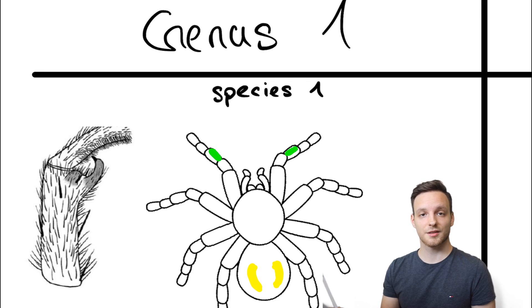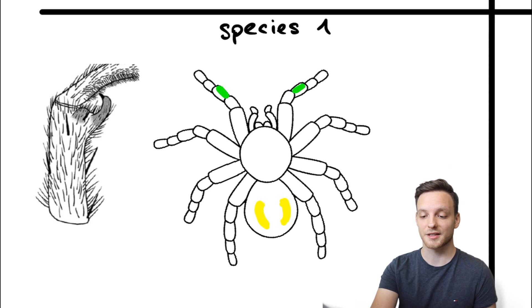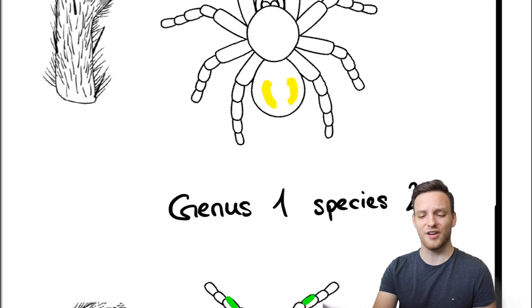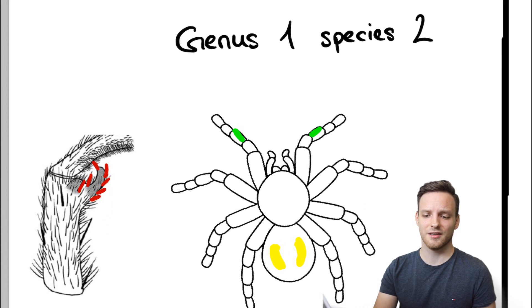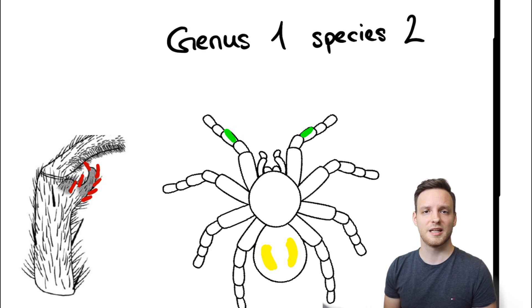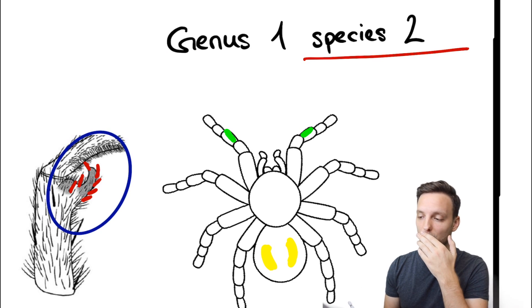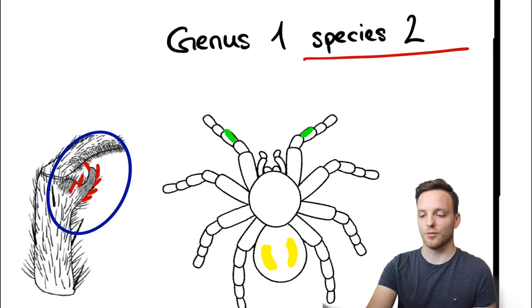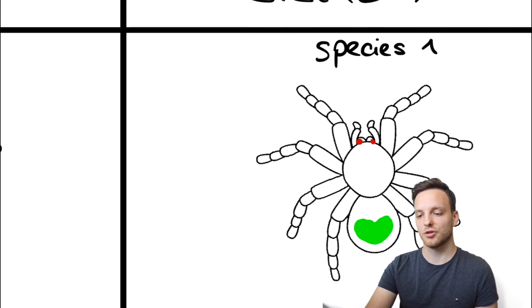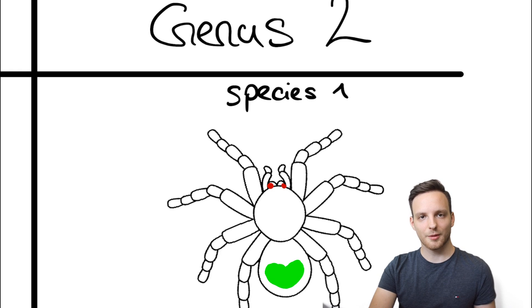Genus one species one has normal tibial spurs but genus one species two as you can see in this example has 15 to 20 spines on these tibial spurs. In the end they have a lot of shared morphological traits but all the traits they share are the genus definition. So think about this way. Example two.